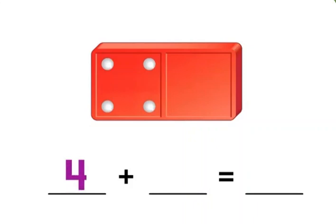Let's write the number four. How many dots are on the right side of the domino? You're correct, zero.